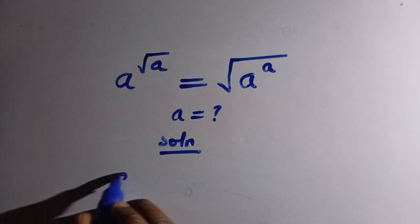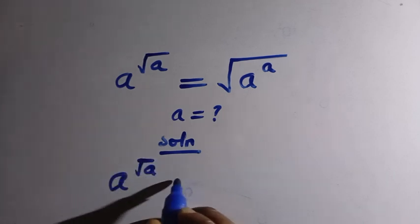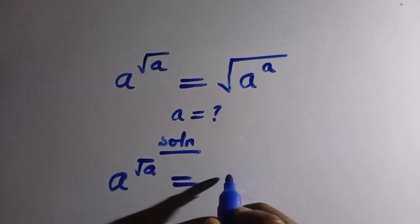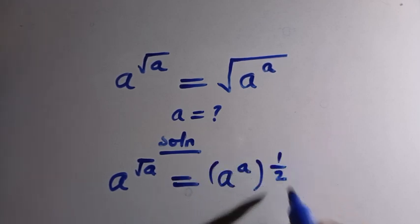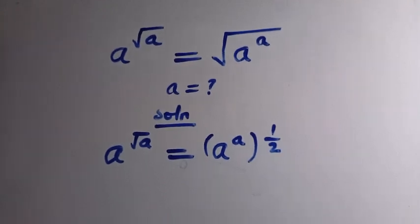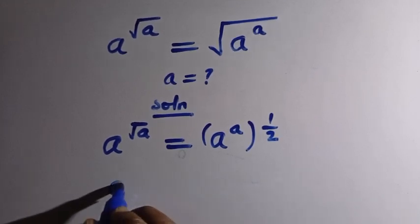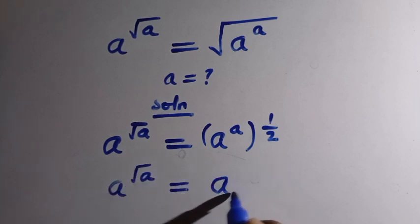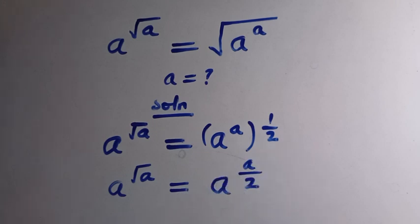We are given a raised to the power of square root of a. On the right-hand side, we change the square root to a raised to power a, then all raised to the power 1 over 2 — since a root is just a power of 1 over 2. So we multiply a by 1 over 2, giving us a raised to power a divided by 2.